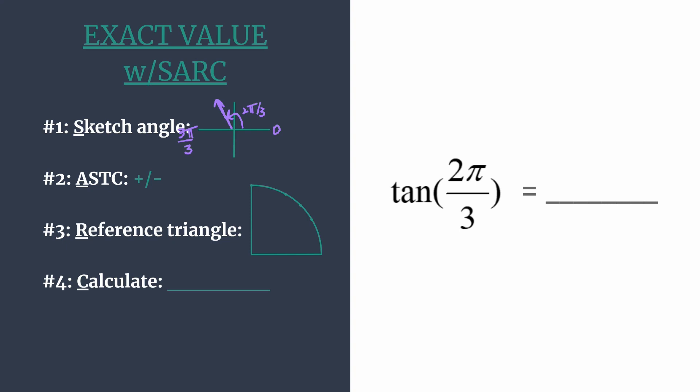Okay, so now that we have that we can move on to step 2 where we decide the sign of our exact value using ASTC. And that's simply the acronym that tells us which trig function is positive in each quadrant. So they're all positive in the first, sine and its reciprocal cosecant in the second, tangent and its reciprocal cotangent in the third, cosine and its reciprocal secant in the fourth. So since we're in the second, sine and cosecant will be positive and all others will be negative.